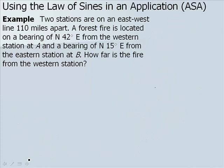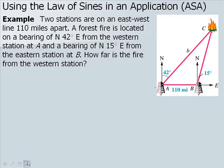Now let's do an application. Two stations are on an east-west line 110 miles apart. A forest fire is located on a bearing of north 42 degrees east from the western station at A, and a bearing of north 15 degrees east from the eastern station at B. How far is the fire from the western station? We want to find side b, which is the distance from the western station to the fire.